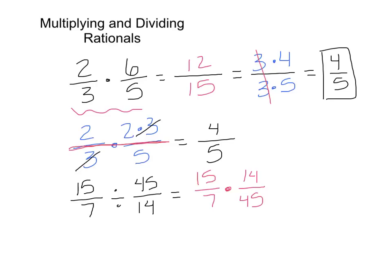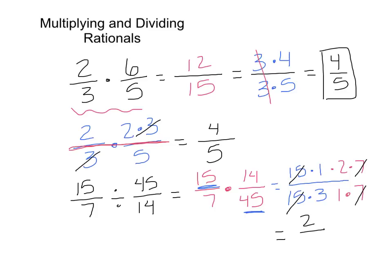Let's factor it before we do too much more. I have 15, 7, 14, and 45. I could go all the way down to the prime factorization, but I'm going to think about commonalities. 15 and 45 have a common factor of 15, so I'm going to factor them based on 15: 15 times 1, and 45 is 15 times 3. Now let's look at 7 and 14: 14 is 2 times 7, and 7 is 1 times 7. My goal is to cancel out common factors — I have common factors of 7 and common factors of 15. So my simplified fraction is 1 times 2, which is 2, over 3 times 1, which is 3.